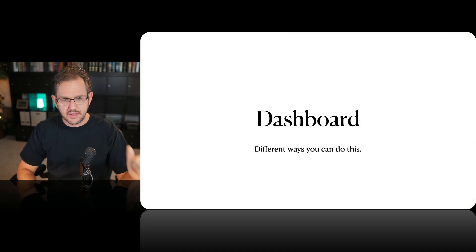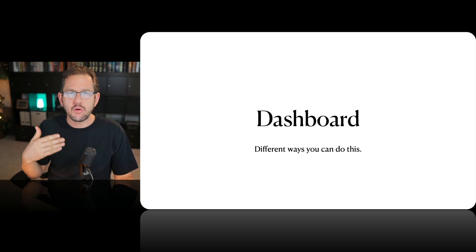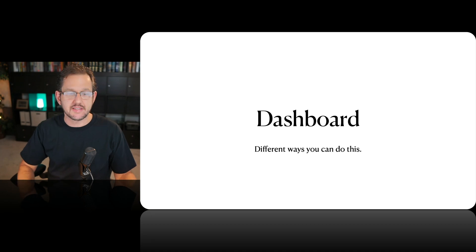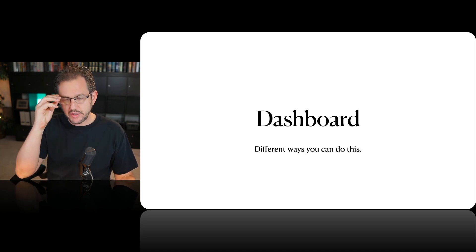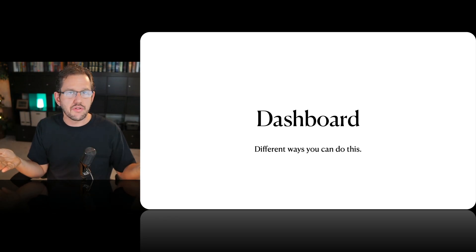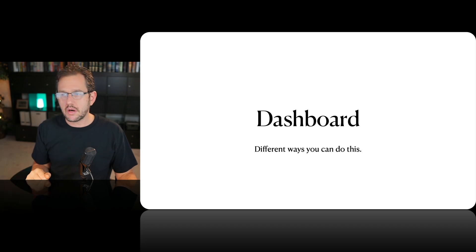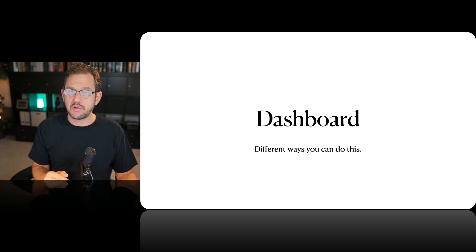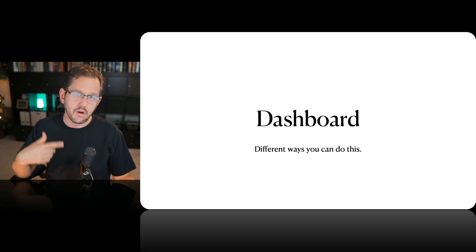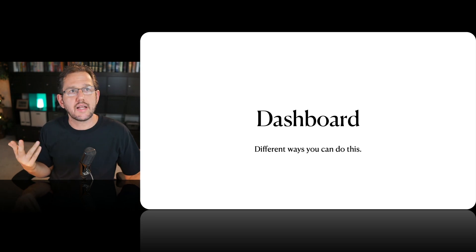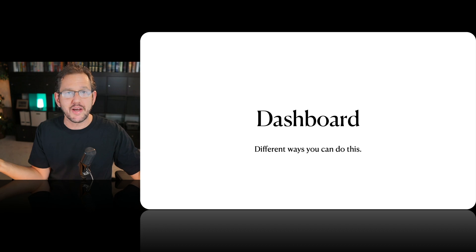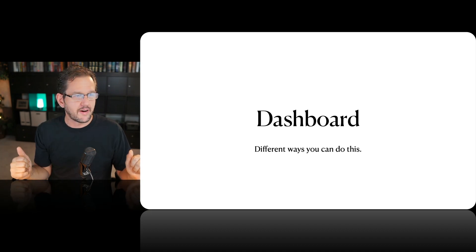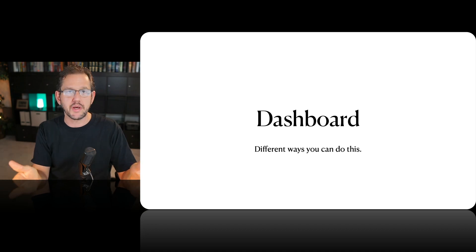Every membership site needs some kind of a dashboard — basically when members log in, this is the main hub they're going to. The dashboard is usually where people can navigate to the different things their membership includes: getting to their account, courses they've purchased, or anything else available to them as a member. One option is to simply make a page like any other page on your site and put what you want on it — a course grid, a link to my account, whatever makes sense.